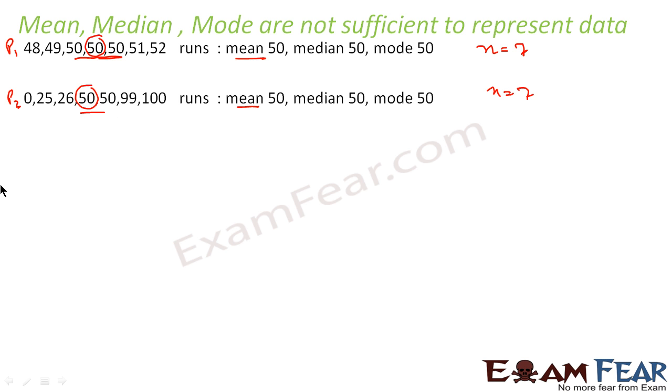Going by the data, we can say that both datasets are not the same - they're actually different, because Player 1 is consistent and Player 2 is not consistent. But if we present only mean, median, and mode to the business guys or the management, they won't be able to find the difference. If we just look at these values, they won't be able to find who is better.